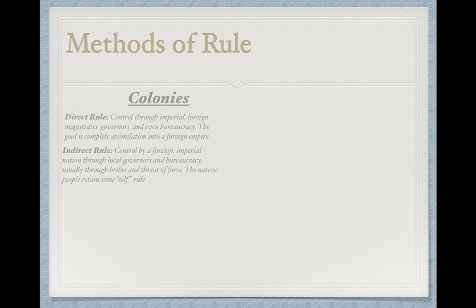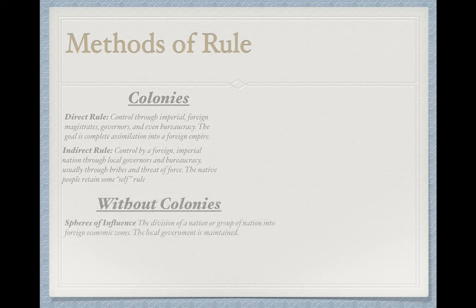You also had indirect rule, which was also a form of colonial control but where a country like Britain would use local governors and bureaucracy to run the country, bribing them or threatening them with force to get them to do what they wanted. Native people were able to retain some self-rule—things like laws about cultural practices and some taxes were left to local people. You also had less obvious ways of imperialism, such as spheres of influence, where a group of nations would decide which areas of the globe they would have control over in terms of business. European businesses were so much more powerful that if one went into a region, it essentially beat out all the competition.